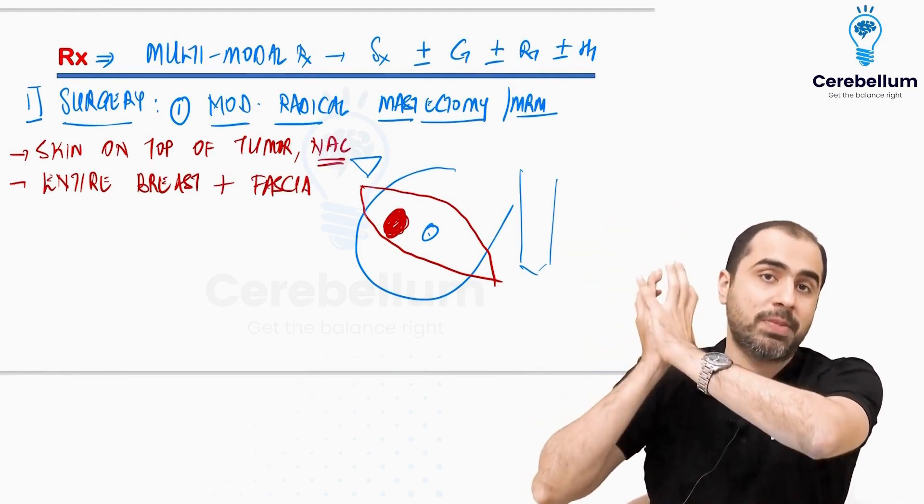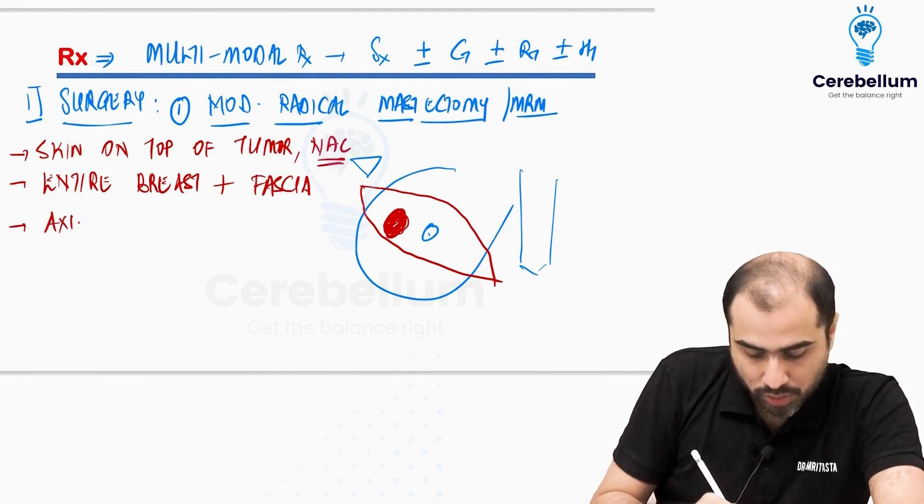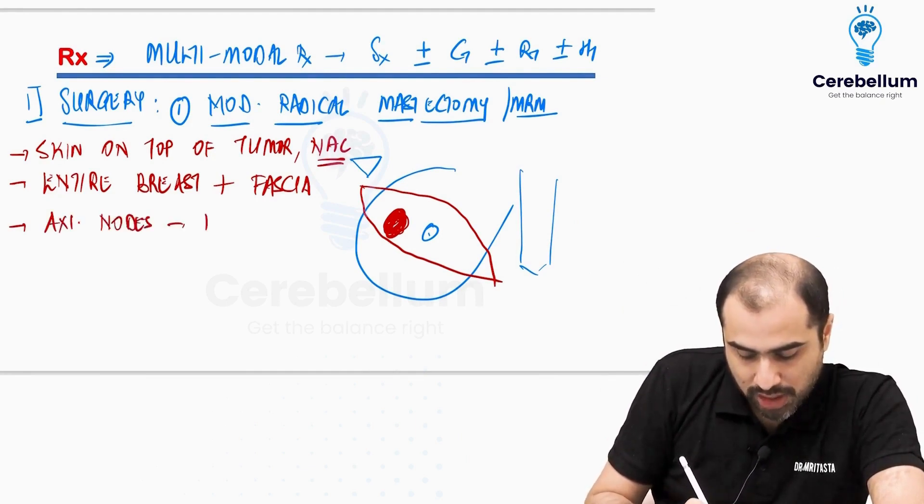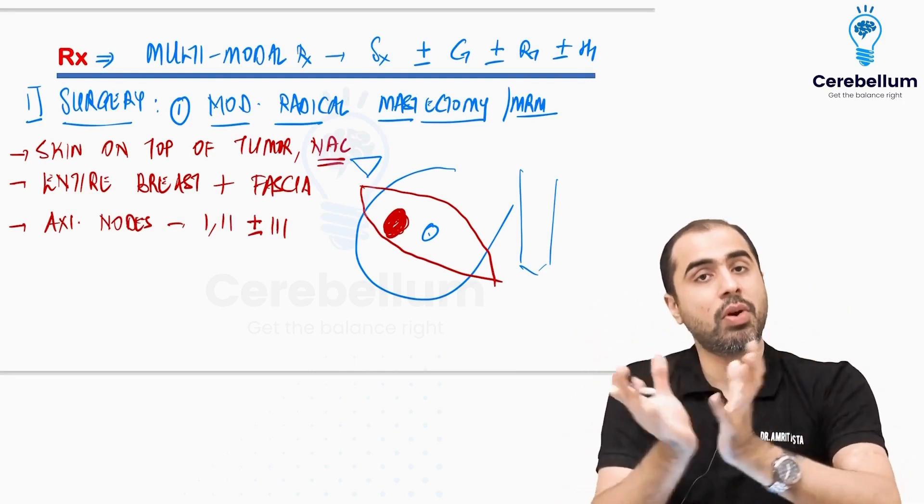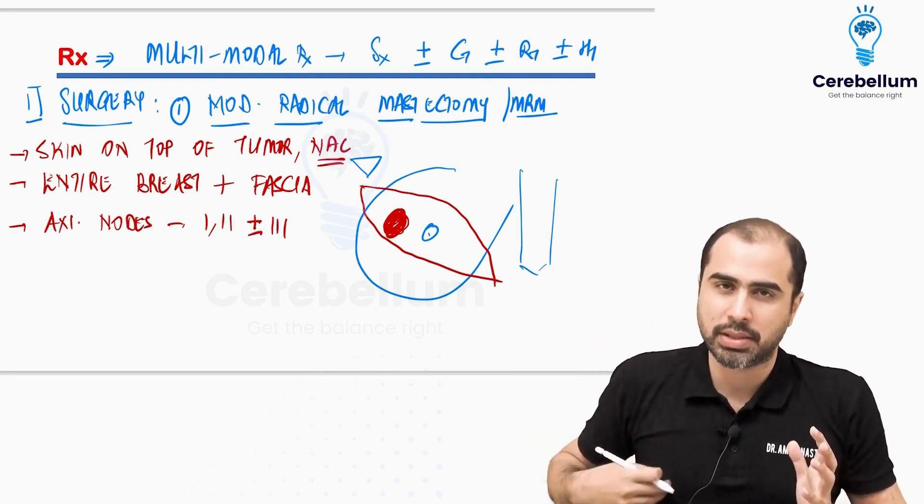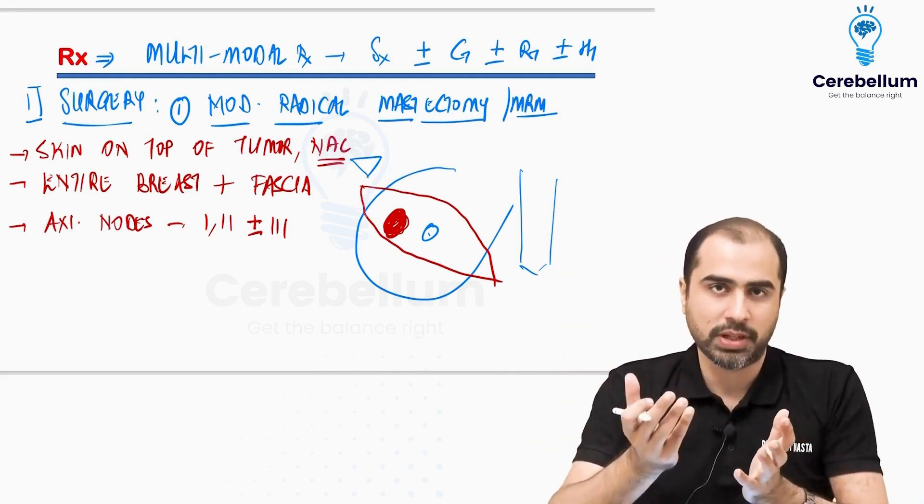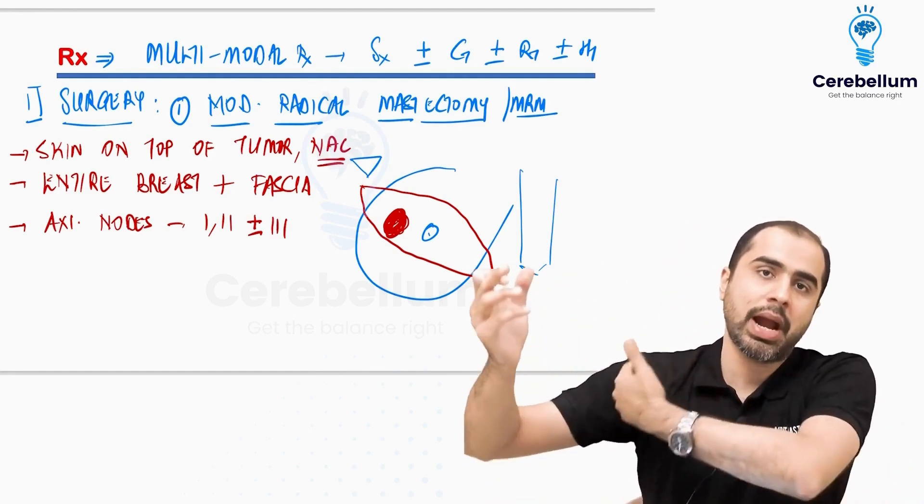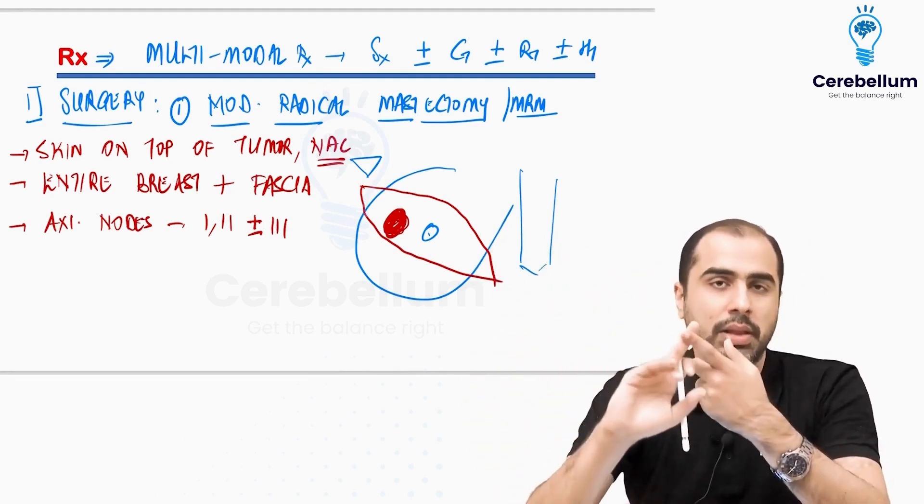So the whole chunk of breast is taken out. And I will remove axillary nodes, usually level 1, level 2, sometimes also level 3. If I have removed all of this, means skin over the breast with the nipple areolar complex, whole breast tissue, pectoral fascia, axillary tail of Spence, and all the axillary nodes level 1, level 2, sometimes even level 3, that is MRM.